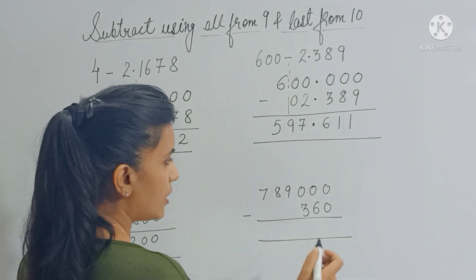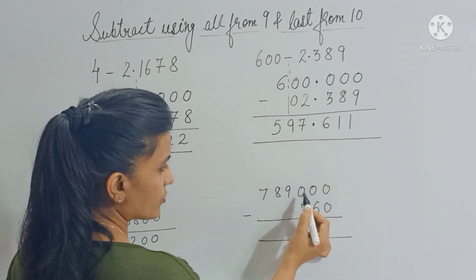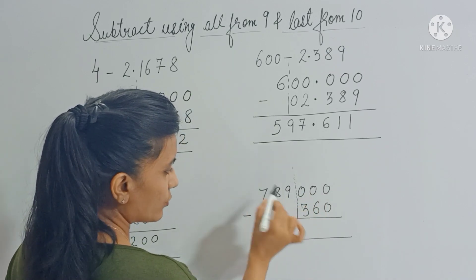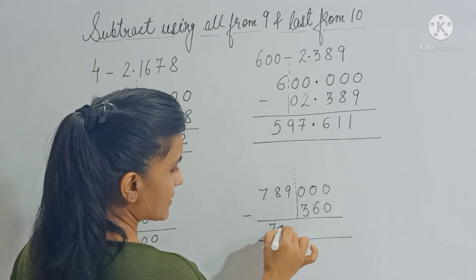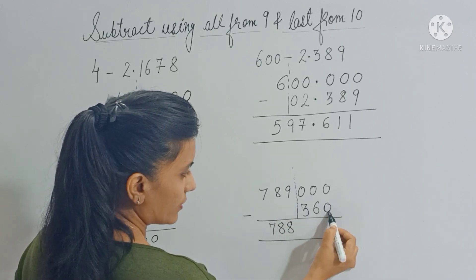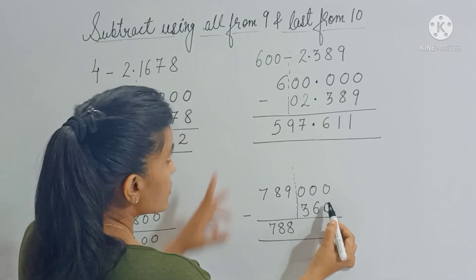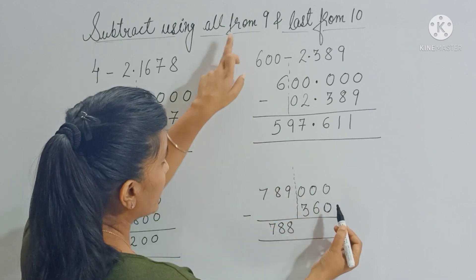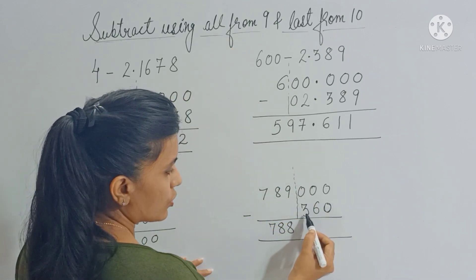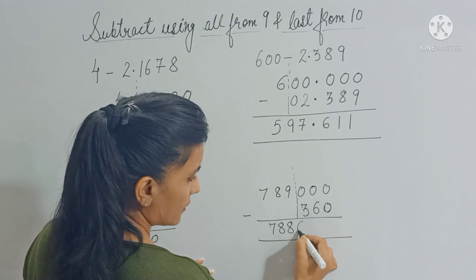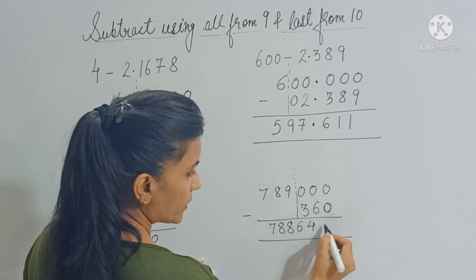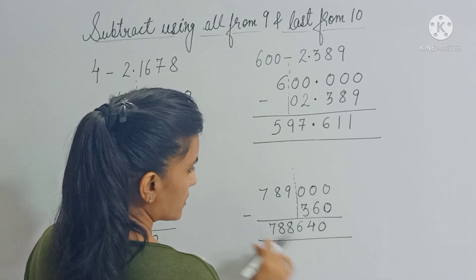Similarly, separate the three zeros to get 789 on the left; reduce by 1 to get 788. On the right you have 1 and 0 — don't apply the rule to 0; apply it only for 3 and 6. So 3 plus 6 gives you 9 and 6 plus 4 gives you 10. Copy the 0 as-is. That is your answer.